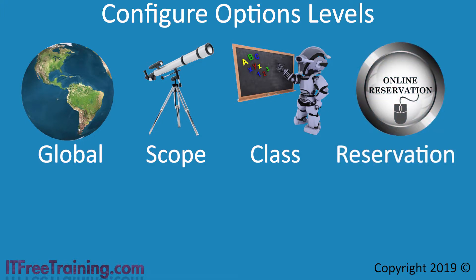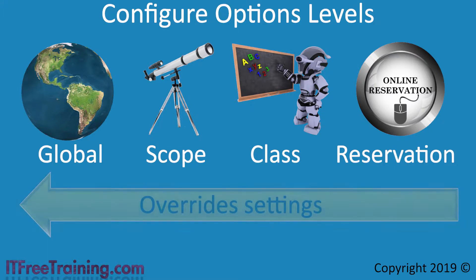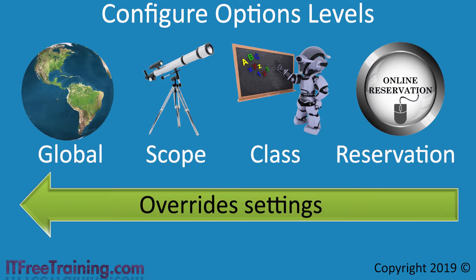The last level is reservations. A reservation allows a DHCP server to allocate the same IP addresses and options to a particular device every time it joins the network. The last point to remember is that moving left to right, settings are overwritten by other settings. For example, any options configured globally will be overwritten by options to the right of it — that is, scope, class and reservations will always override global options.